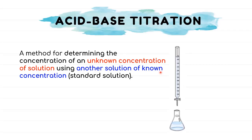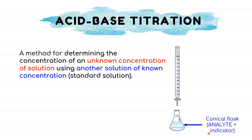Acid-base titration is a method used to determine the unknown concentrations of an acid or base. The solution of unknown concentration is located in the conical flask and is known as the analyte. An indicator will be placed in the analyte to give an observation from these reactions.